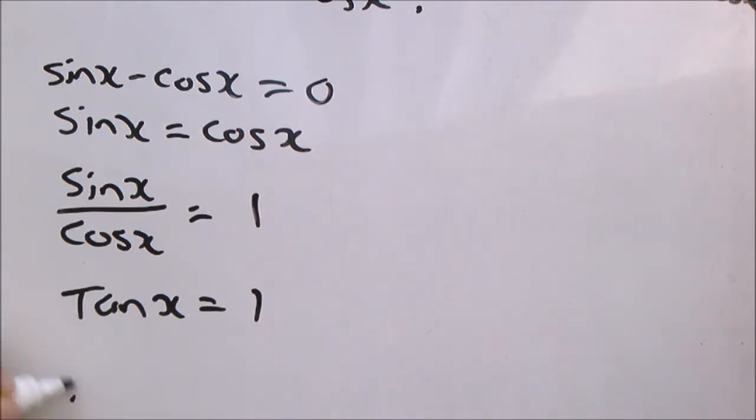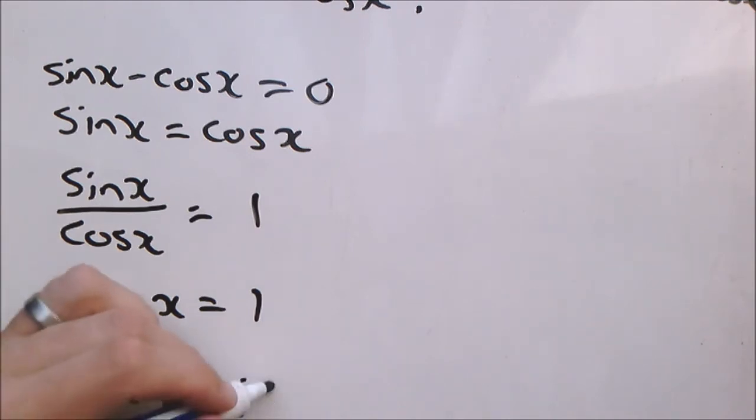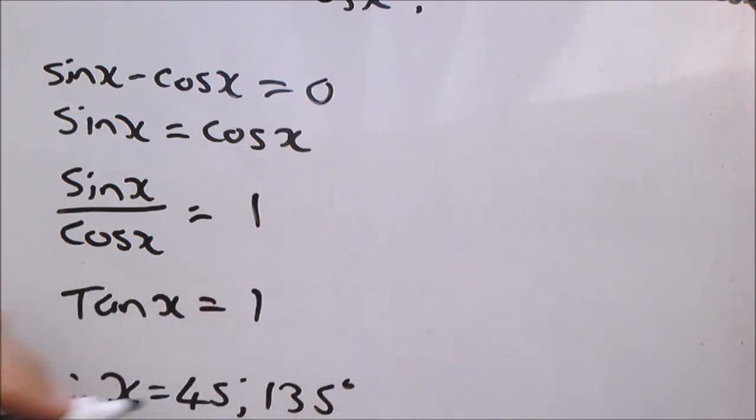And where is tan x equal to 1? Well, where x is equal to 45 and 135 degrees. So at these x values, this identity will be undefined.